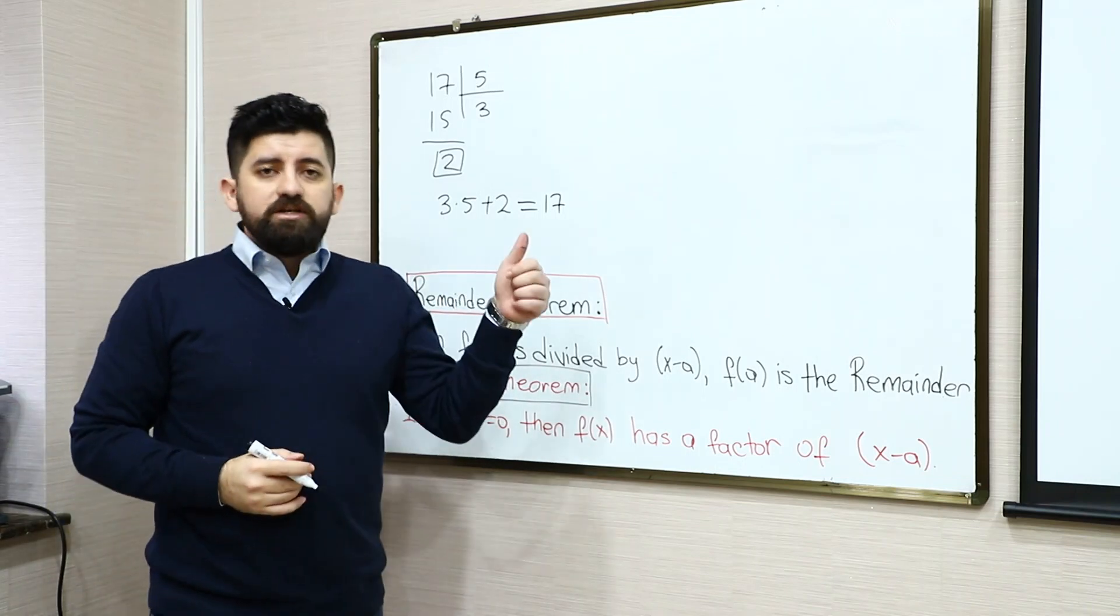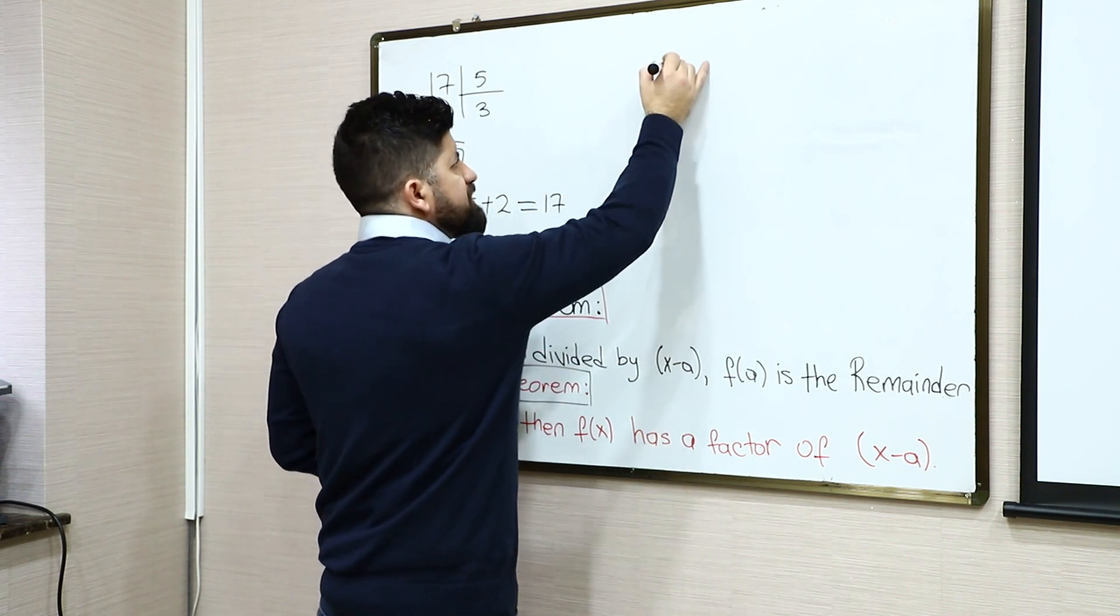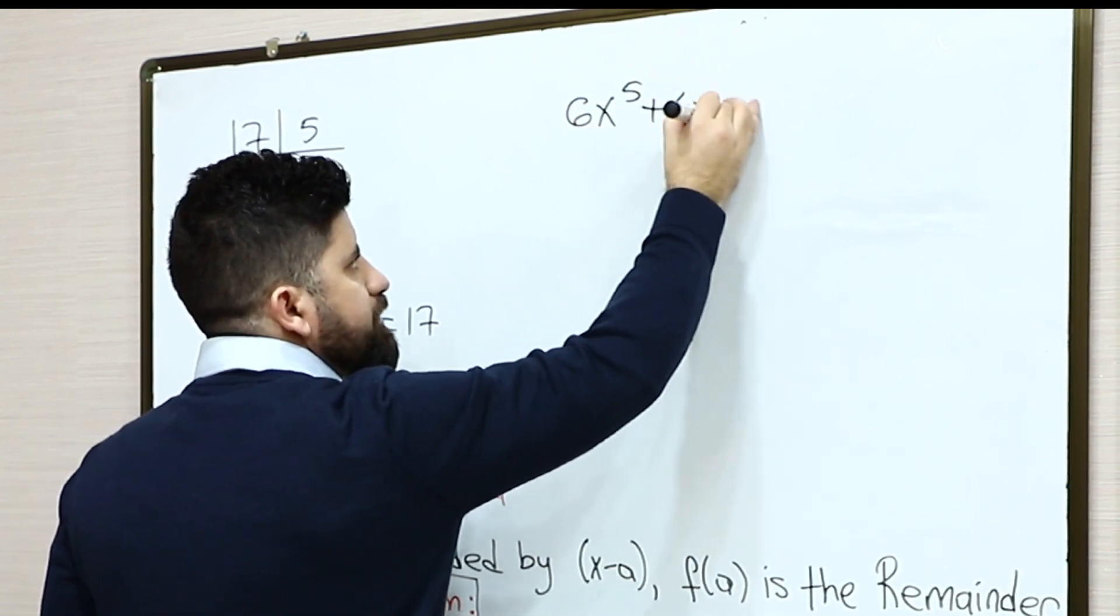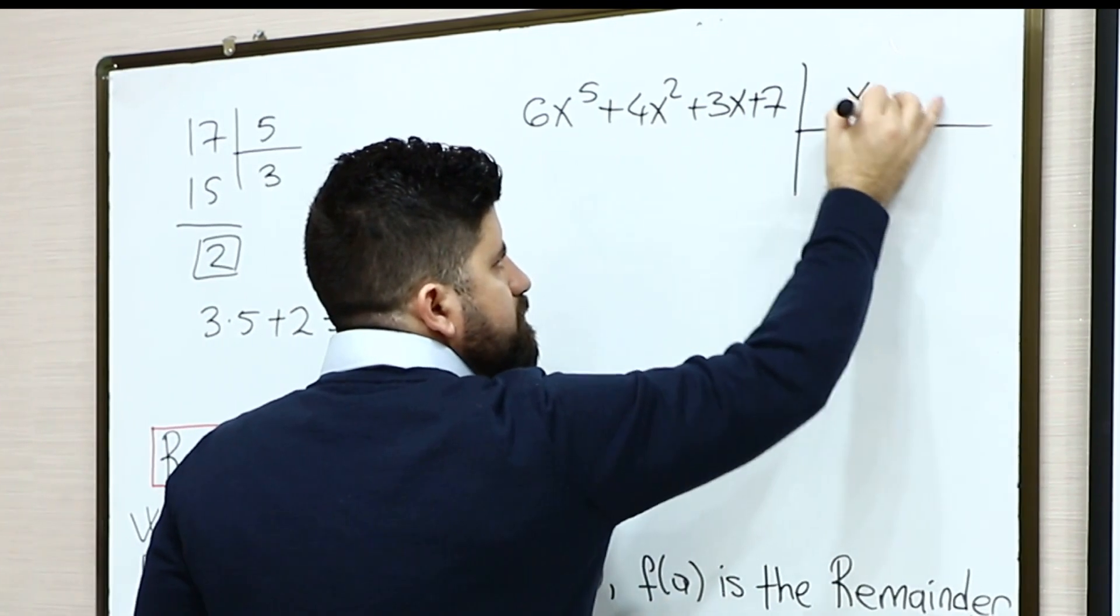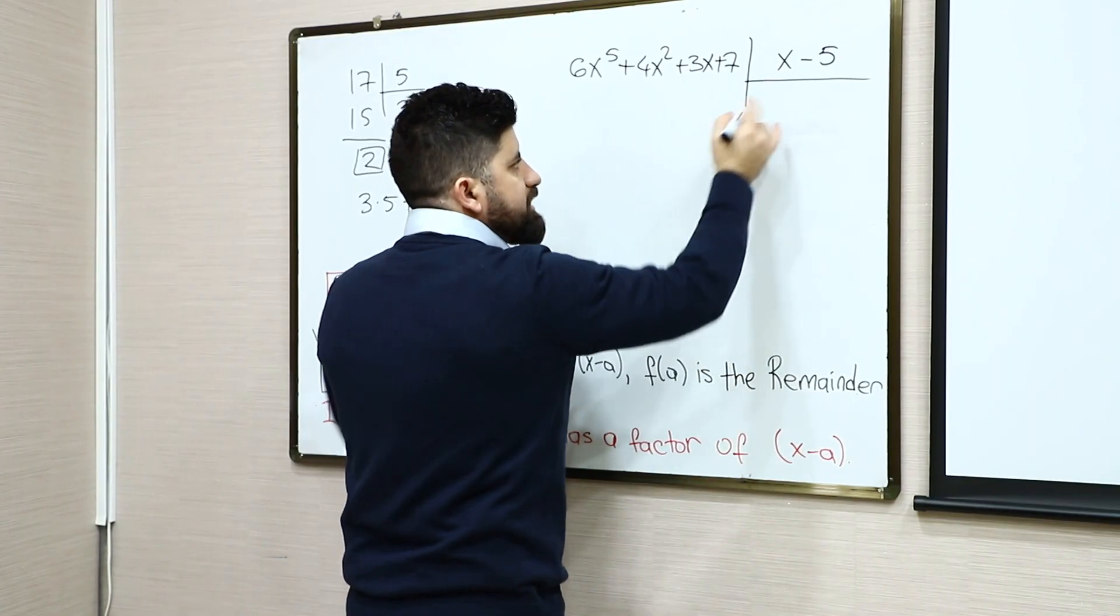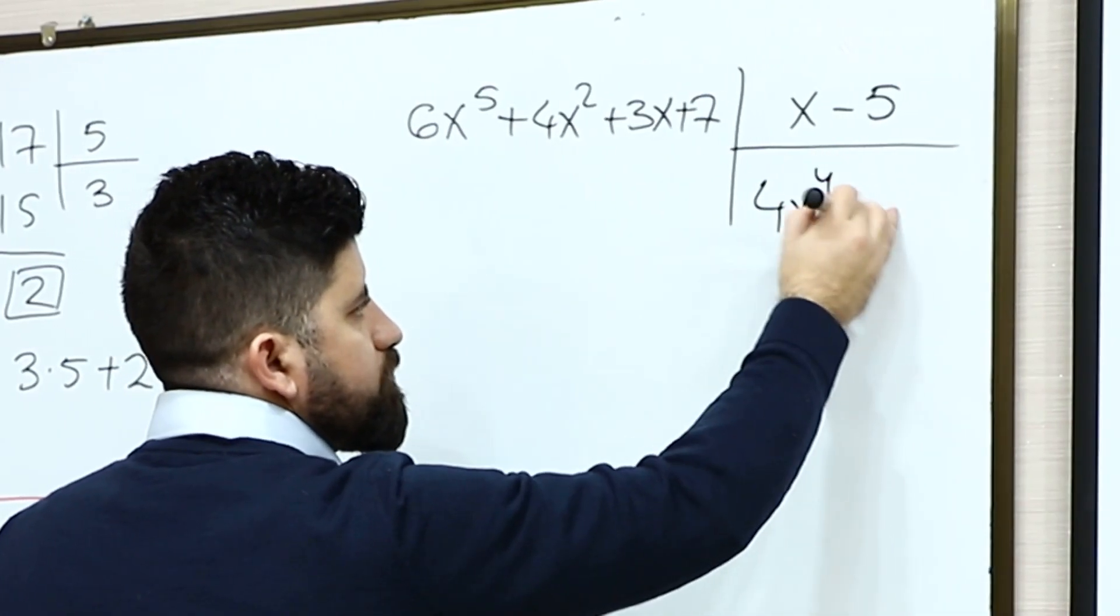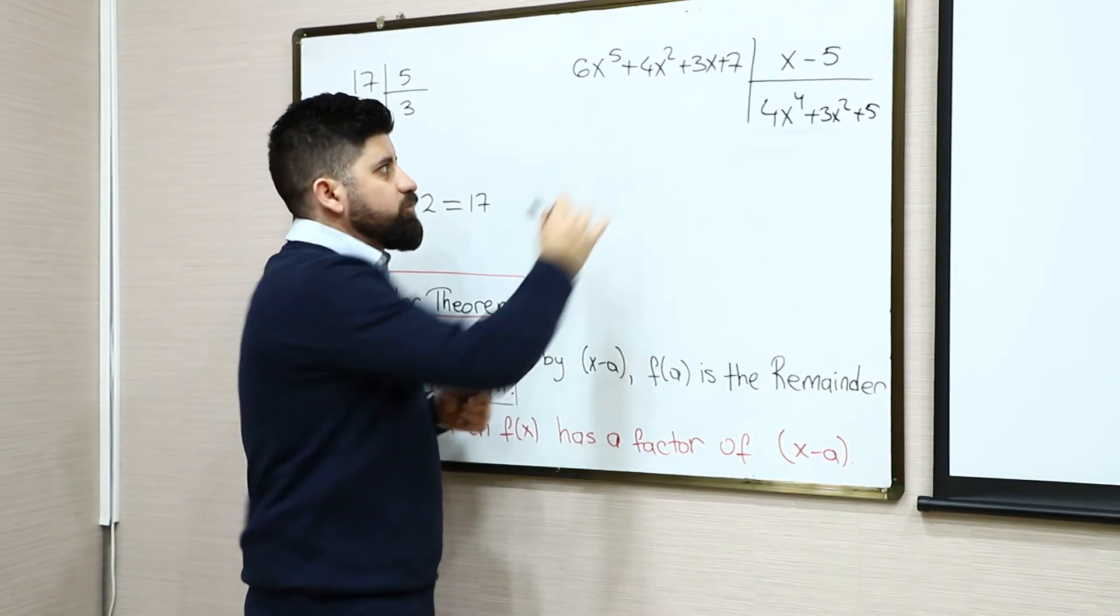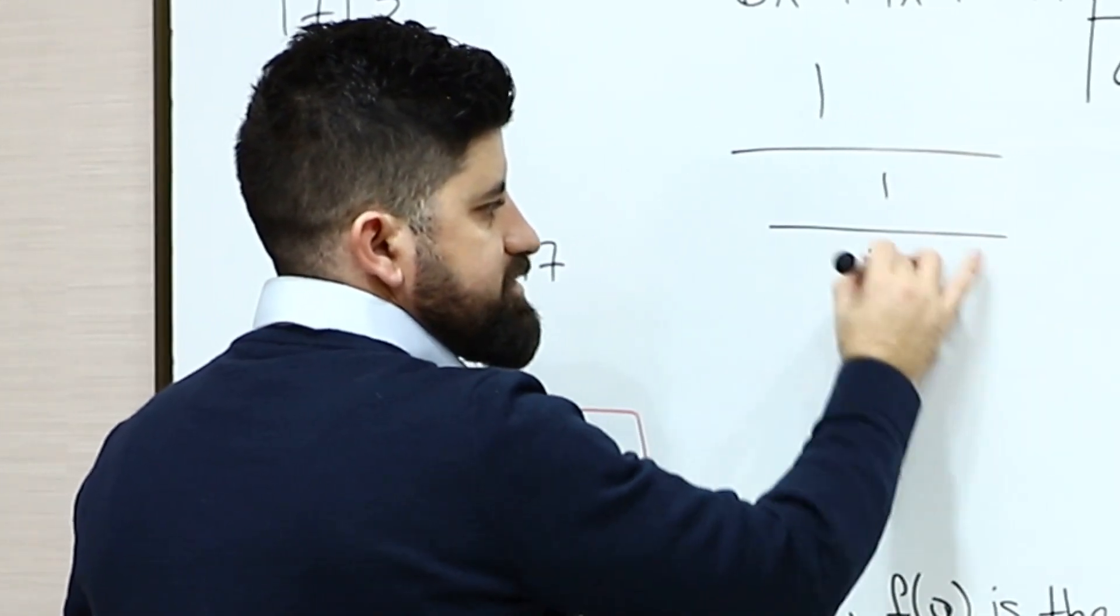Now, if we do the same division operation on polynomials, for example, let's take any polynomial 6x⁵ plus 4x² plus 3x plus 7 divided by x minus 5. Let's assume that we got 4x⁴ plus 3x² plus 5 as a quotient and let's assume that we did long division and we got 16 as a remainder.